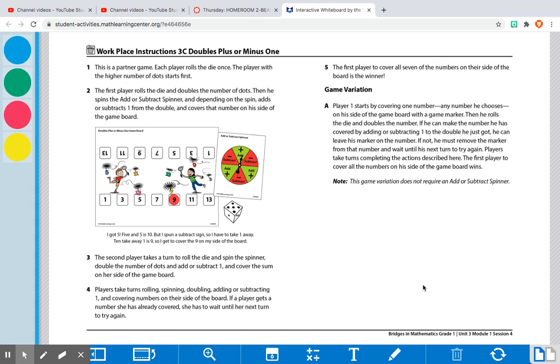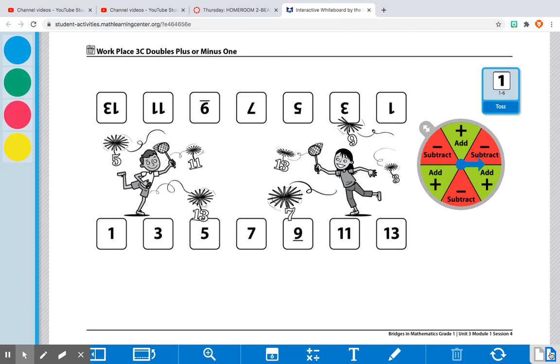All right, so here's how the game works, or here's how all the interactive workplaces work. It will give the directions on the first page, and then down here in the right-hand corner it looks like there's multiple pages. If you press that other page, it brings you to the game board. So here's how it works. If you have a partner, play with a partner. If you don't, like I don't have a partner right now, I'm just going to pretend to be two people. So here are the game chips, and then here's my spinner, and then my spinner here.